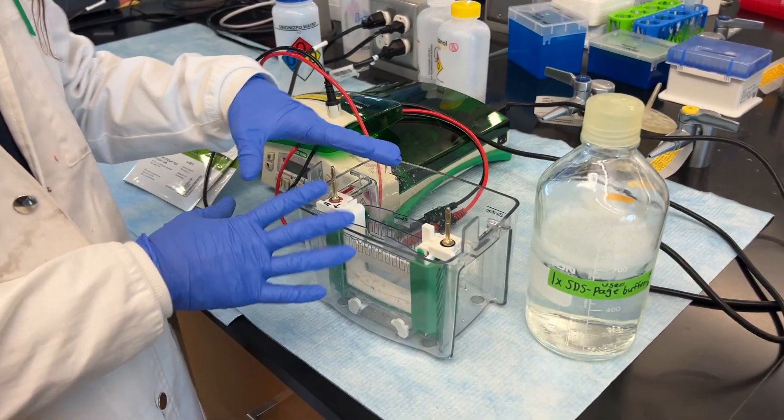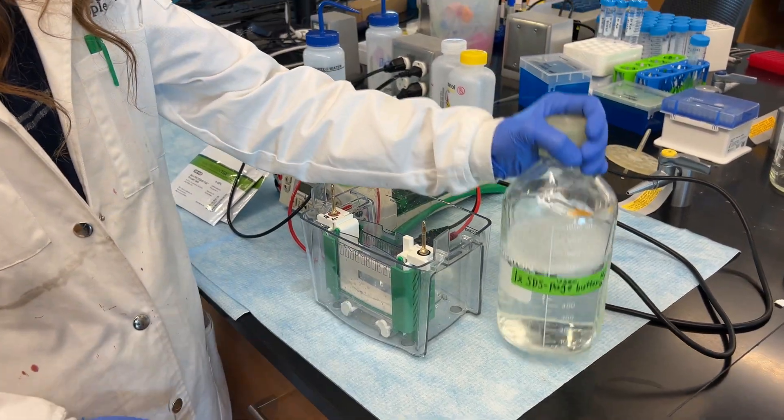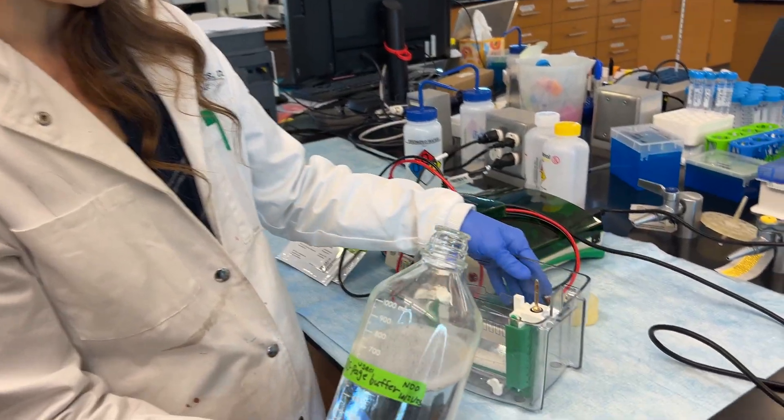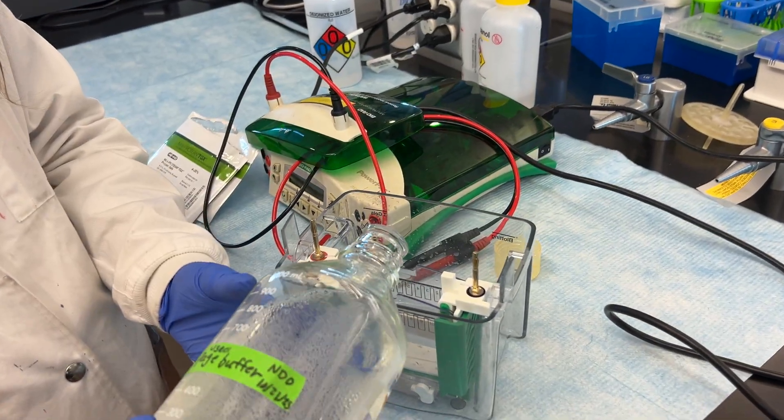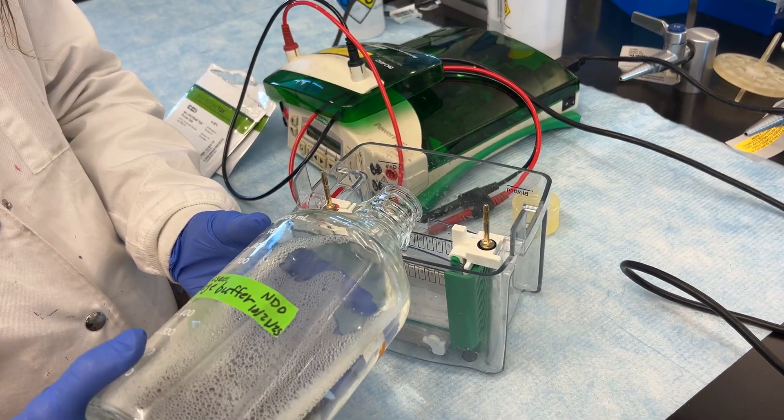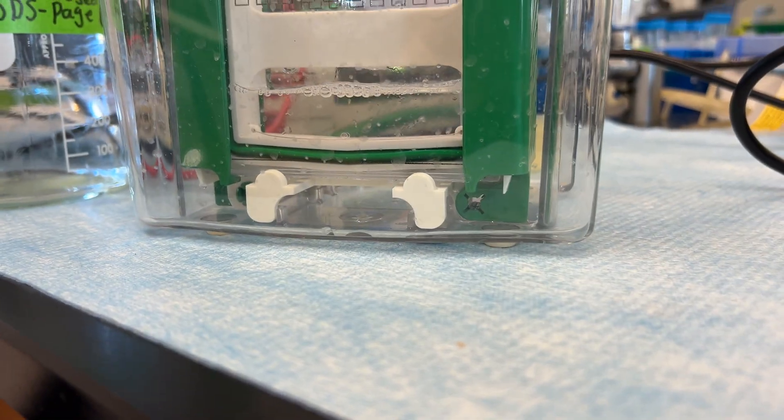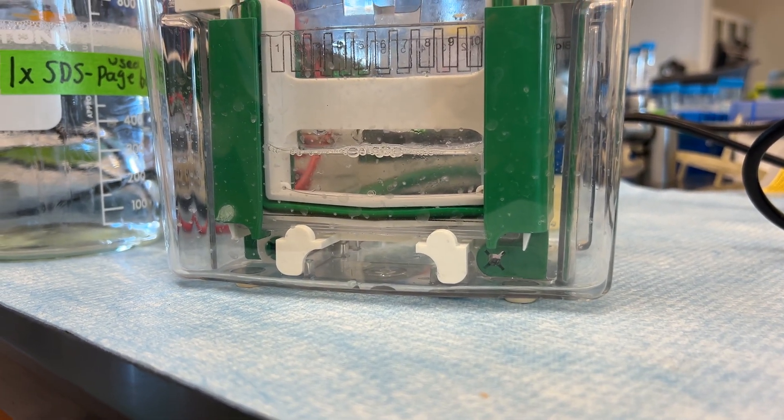In order to make sure that you actually do have a sealed cassette, what you want to do is take some of your buffer and pour a little of it into the center. And now you want to look and make sure that the line is not going down, you're not leaking.